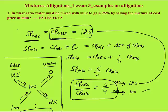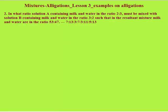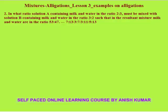In this way you can apply the allegation. For the next example, please try to pause the video and solve it yourself. The question says: in what ratio must solution A — containing milk and water in the ratio 2 is to 3 — be mixed with solution B — containing milk and water in the ratio 3 is to 2 — such that the resultant mixture has milk and water in the ratio 53 is to 47? I will solve this using both allegation and equations. First, using the milk allegation.